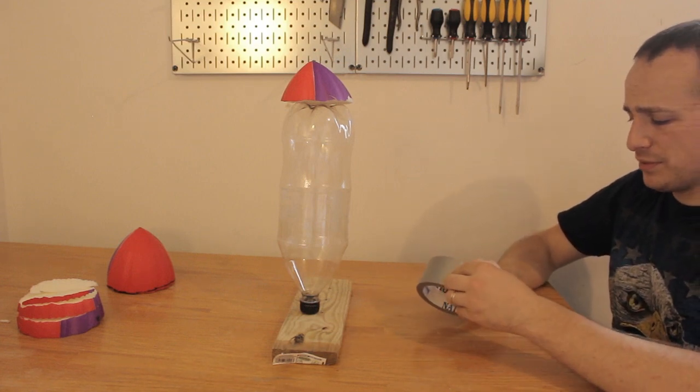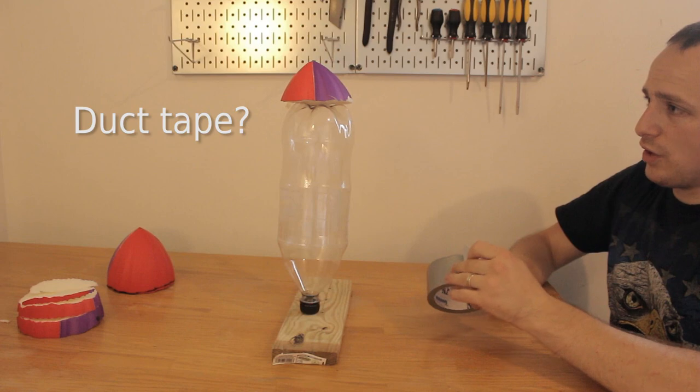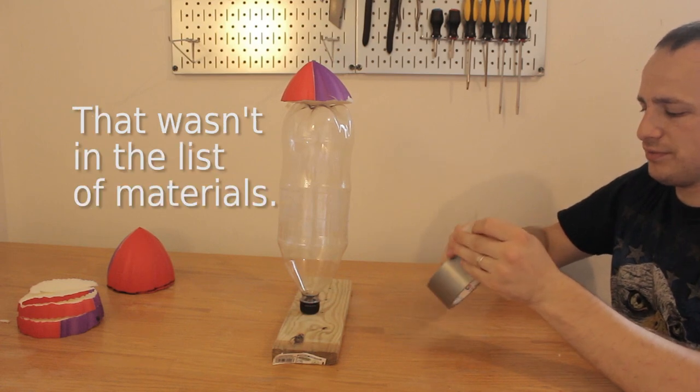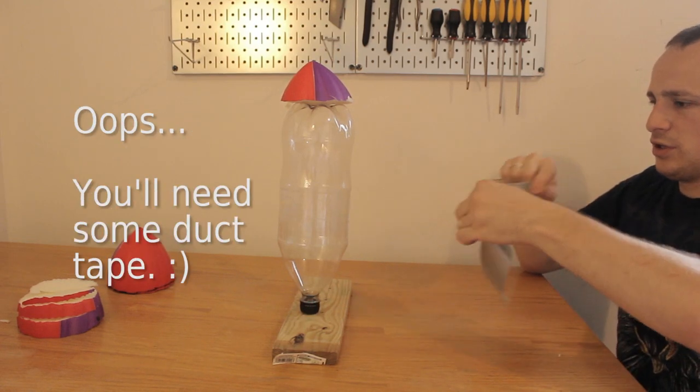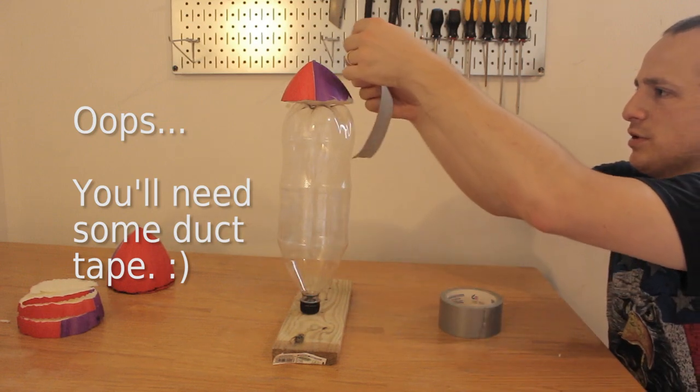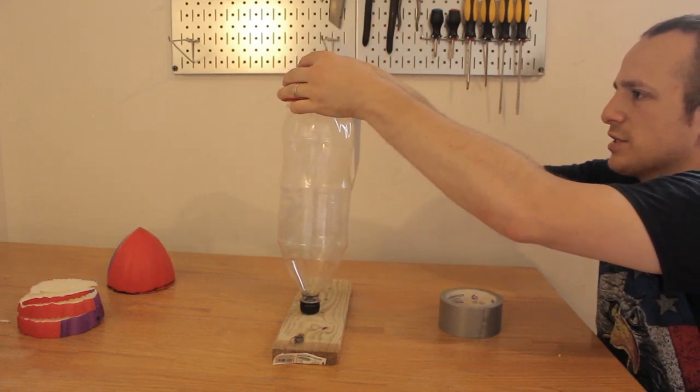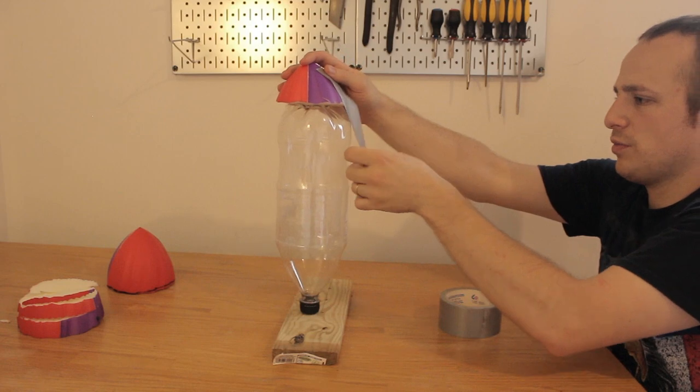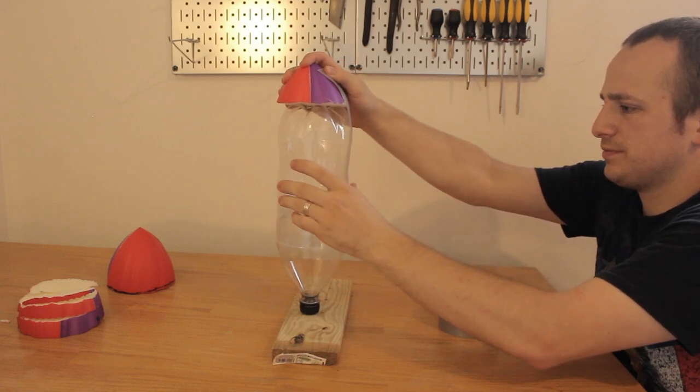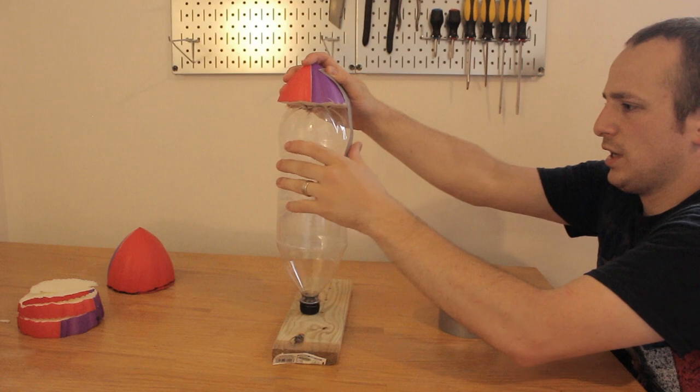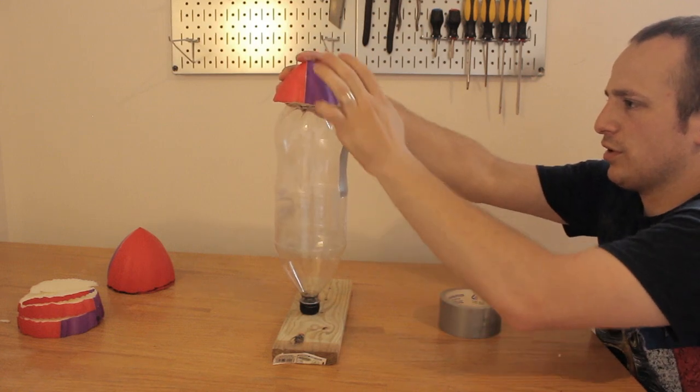I'm going to add some duct tape so that we can go ahead and attach our nose cone to our two liter bottle. We're going to do vertical stripes to try to make it as streamlined as possible, doing our best to keep our rocket nice and straight. I'm just going to do this all the way around our rocket.